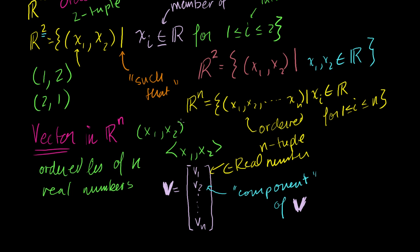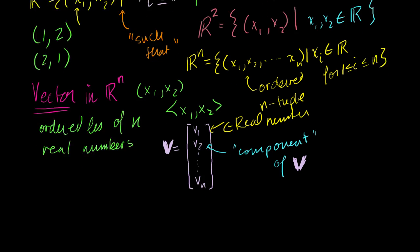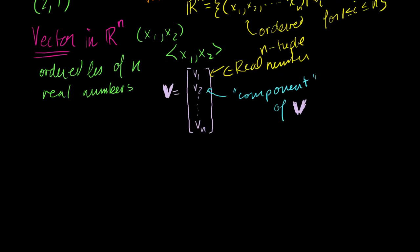But I'm going to define my vector as in ℝⁿ, as an ordered list of n real numbers. And I'll define it - this is an example - it would be v₁, v₂, all the way to vₙ, where each of these is a member of the real numbers. And just to make sure you understand the notation or terminology, each of these is called a component of our vector. And I want to be very careful here - when we write vectors, you want to make sure you have a nice bold v.